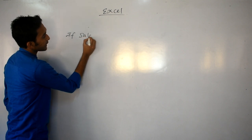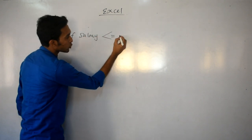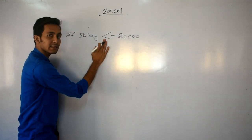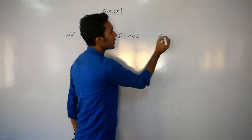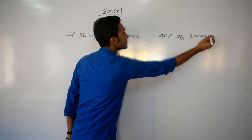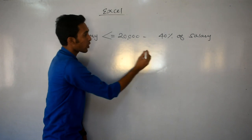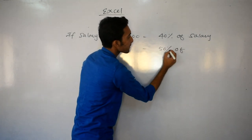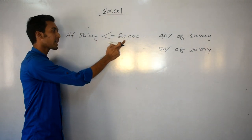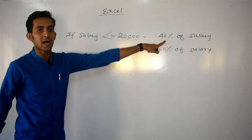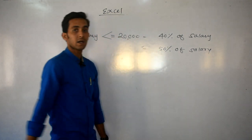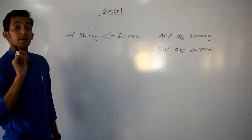If salary is less than or equal to 20,000 — 'up to' means less than or equal to — then bonus is 40% of salary. Otherwise (i.e., salary greater than 20,000), bonus is 50% of salary. अगर salary 20,000 या उससे कम है तो 40% मिलेगा, अगर 20,000 से ज़्यादा है तो 50% of salary मिलेगा।